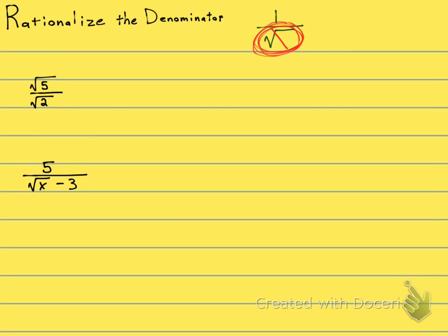Here are some example problems. Remember, if we don't have an equation — if there's no equal sign — the only way that you can change a fraction is by multiplying the numerator and denominator by the same thing. If you multiply by the same thing on top and bottom, you're not changing the value, you're just changing the way that it looks.